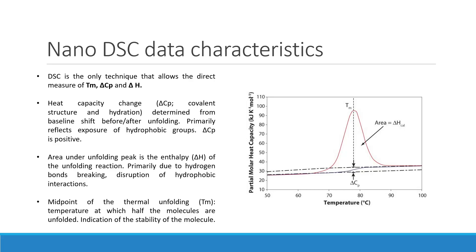The heat capacity change is determined from the baseline shift before and after unfolding and primarily reflects exposure of hydrophobic groups. The area under the unfolding peak is the enthalpy of the unfolding reaction, primarily due to hydrogen bonds breaking or disruption of hydrophobic interactions. The midpoint of the thermal unfolding is the temperature at which half the molecules are unfolding and is an indication of the stability of the molecule.